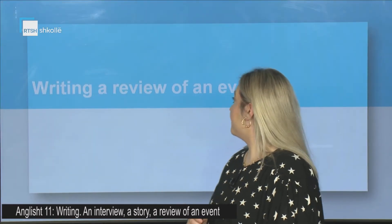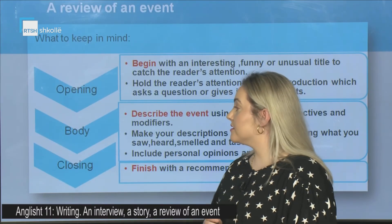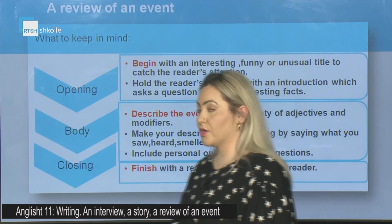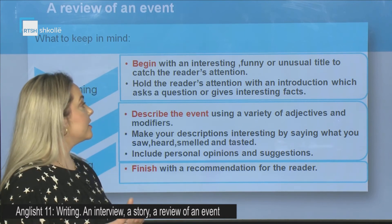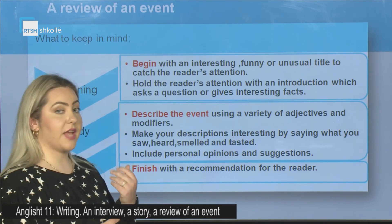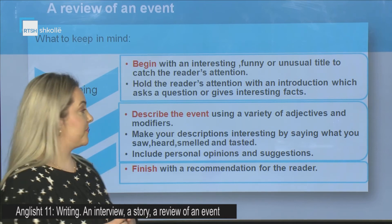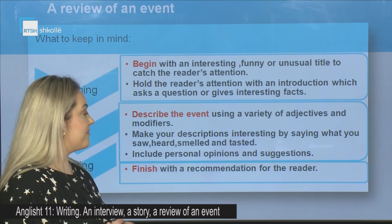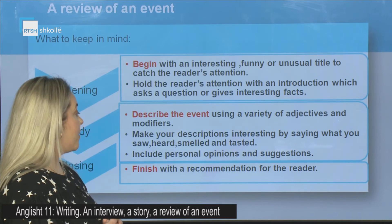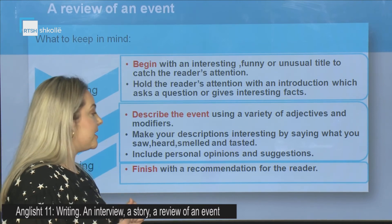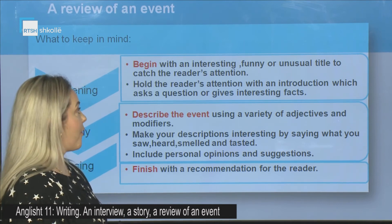Now, writing a review of an event. Let's learn how to do it together. What to keep in mind — the structure: there is the opening, the body, and the closing. In the opening, begin with an interesting, funny, or unusual title to catch the reader's attention. Hold the reader's attention with an introduction which asks a question or gives interesting facts. In the body, describe the event using a variety of adjectives and modifiers. Make your descriptions interesting by saying what you saw, heard, smelled, and tasted. Include personal opinions and suggestions. Lastly, in the closing, finish with a recommendation for the reader.